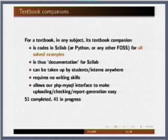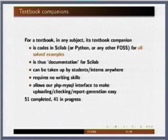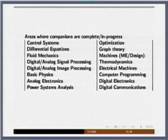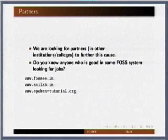The textbook companion project serves two purposes: it gives you examples to use, and it becomes documentation for the tool itself. These are projects which students can easily contribute to — we have about 50 textbooks contributed by various students all over India. It does not require major programming skills; one just needs to know the basics of the tool and solve the example problems. Many students come for internships at IIT Bombay this way. We are looking for partners from your colleges — if you know anyone good at a FOSS tool like R for statistical analysis and they want to generate material, they can contact us.